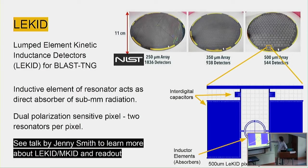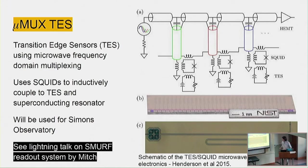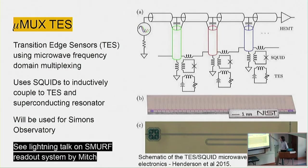If you zoom in on one of the pixels - a pixel is actually two detectors - we have two polarizations. The resonator is an inductive element and then an inter-digital capacitor, and we have a coupling capacitor to couple to a microwave feed line. Each detector has its own resonant frequency, and we multiplex them all to one feed line. A competitor to kinetic inductance detectors is frequency-multiplexed TES - transition edge sensors - coupled to SQUIDs and then inductively coupled to superconducting resonators, multiplexed in the same way.